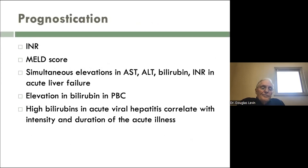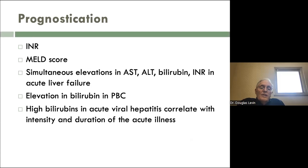Regarding prognostication: the INR is the single best test, assuming you're not on an anticoagulant and don't have a congenital clotting disorder. The MELD score, which looks at creatinine, INR, AST, and ALT, is good — often people use MELD-NA, which adds sodium. Simultaneous elevations of AST, ALT, bilirubin, and INR in acute liver failure are associated with bad prognosis. In primary biliary cirrhosis, elevation of bilirubin per se is associated with a bad prognosis. High bilirubin in acute viral hepatitis correlates with intensity and duration of the acute illness but doesn't necessarily mean you won't recover fully.